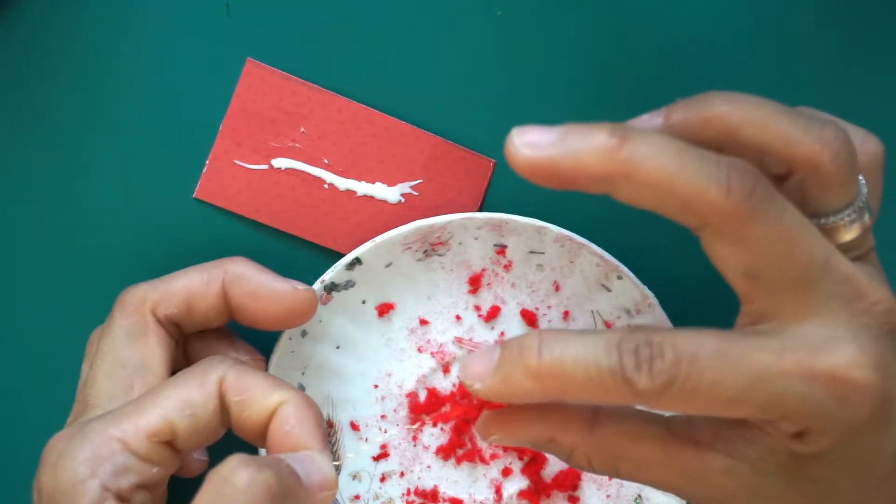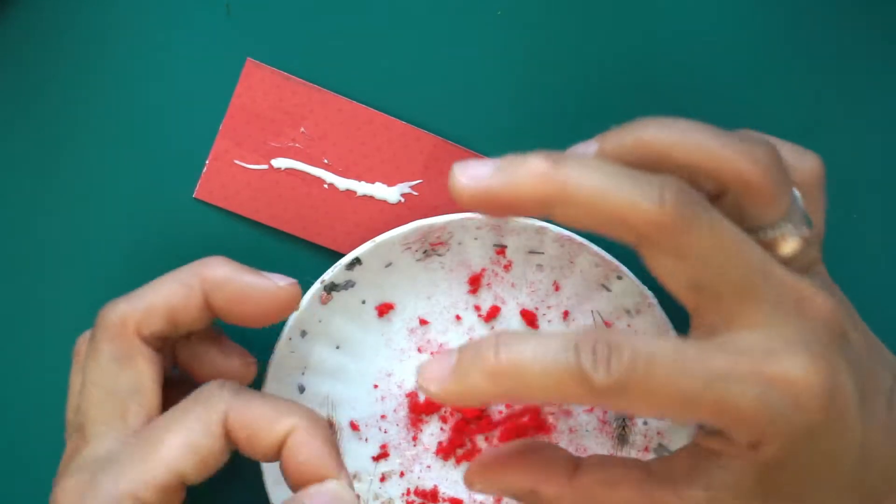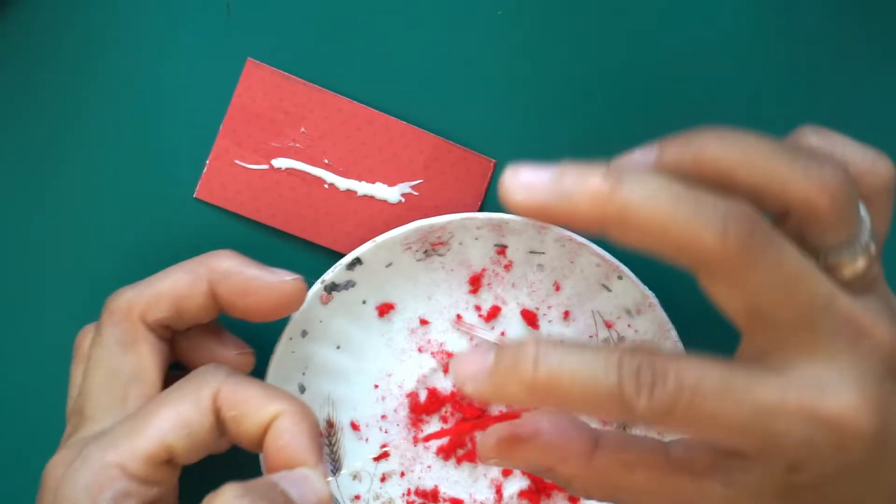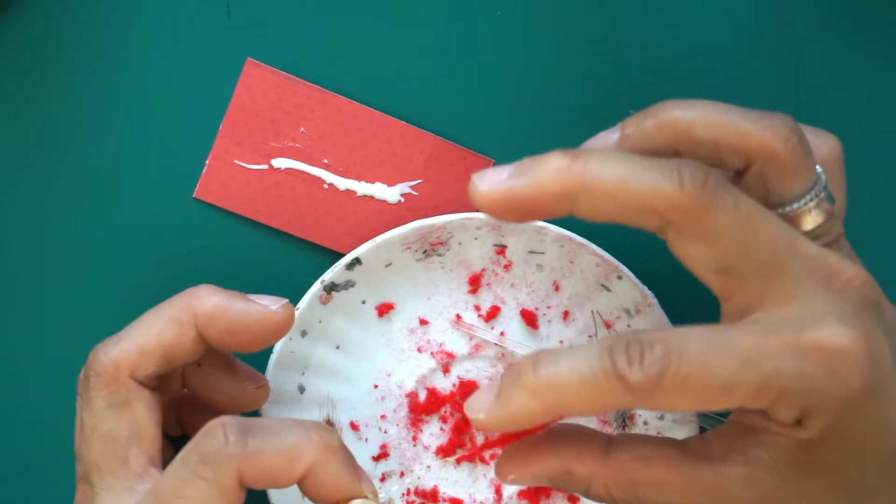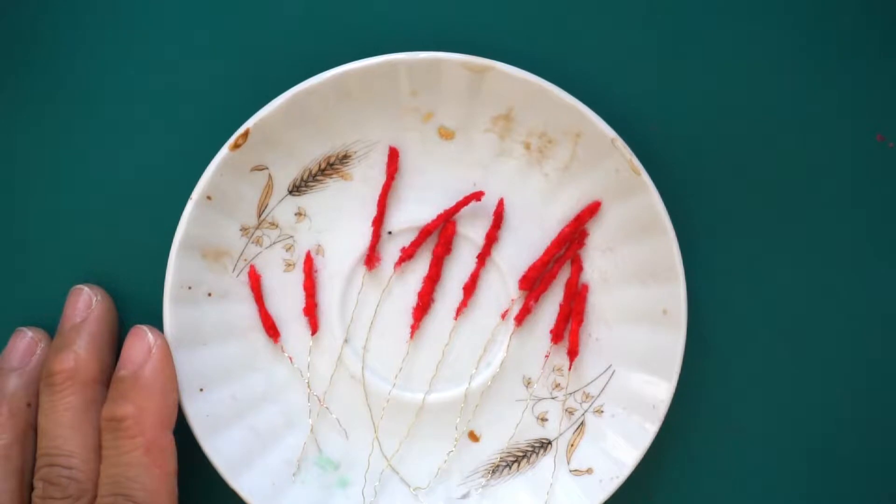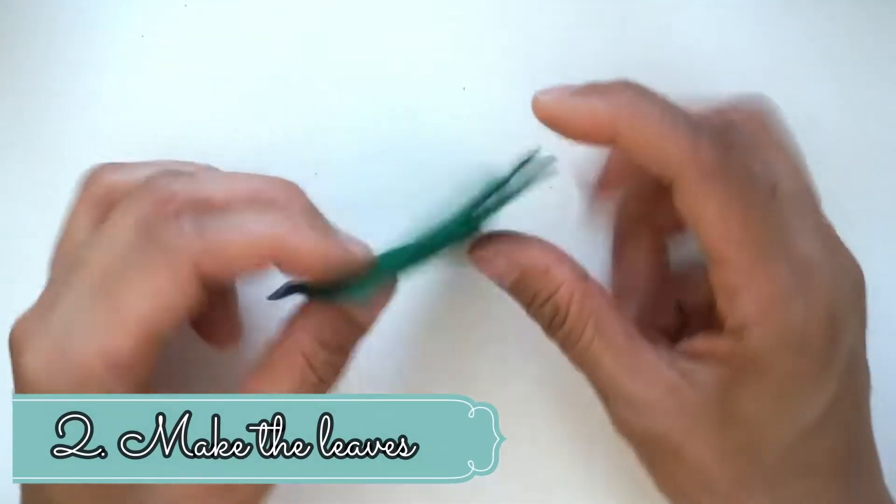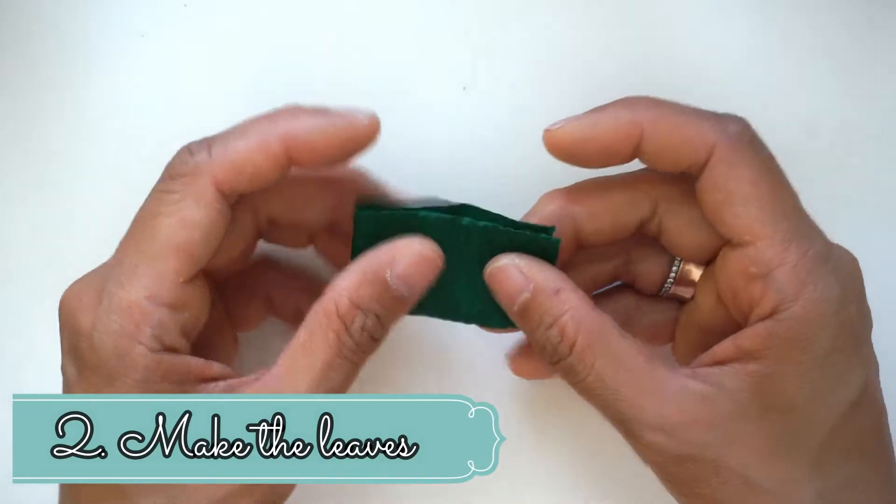And then make several of these tails. To make the leaves, fold your crepe paper several times and draw your leaves following the grain so that your leaves will already have that texture in it.